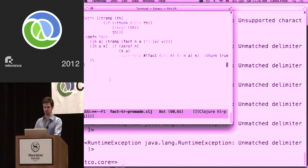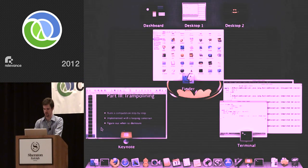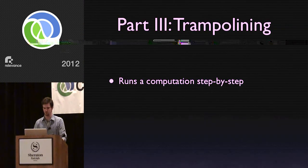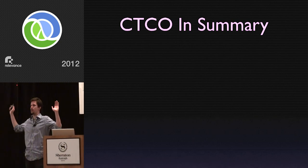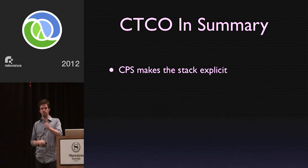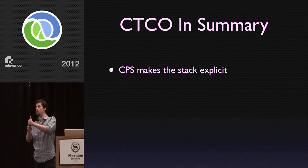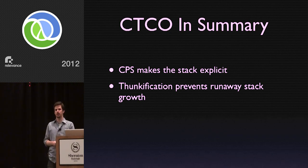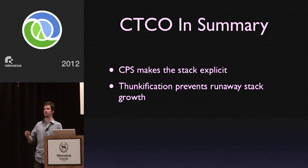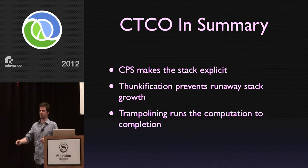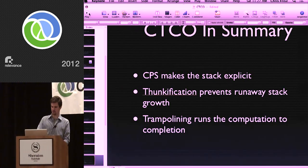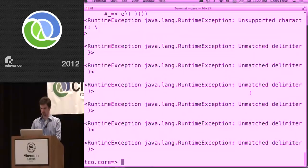So now we understand all the different transformations in CTCO. Just in summary: when somebody asks how you get tail call optimization out of a language that doesn't have it, you tell them — we CPS, because that makes the stack an explicit thing we have in our hands as a function, a continuation which is a stack. We thunkify our expressions so we can run them step by step and keep the stack from getting too big. And finally we throw it on a trampoline so it runs bit by bit until it's done. Although my manual trampoline failed due to copy paste errors, I can show you how CTCO does it directly.